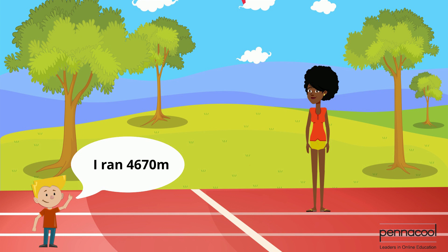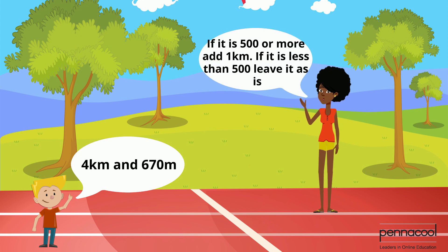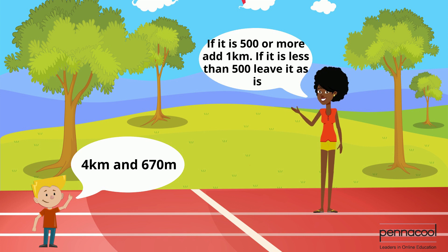Coach informs him to remove the thousands. He removes the 4,000 meters, which is 4 kilometers, and is left with 670 meters. Coach then informs him: if what is left is 500 meters or more, add one kilometer to the thousands. On the other hand, if what is left is less than 500 meters, leave the number of kilometers as is.